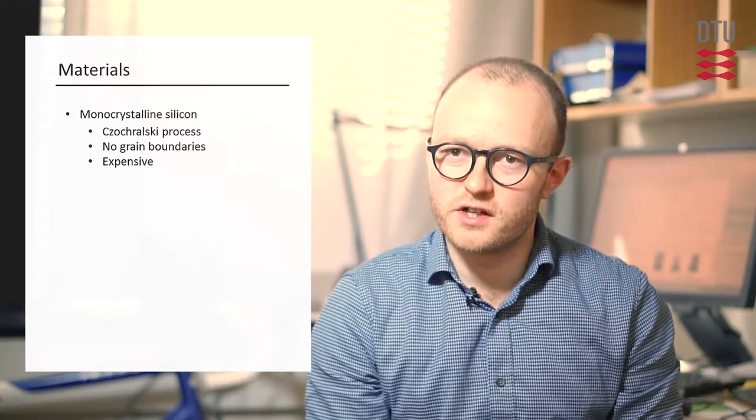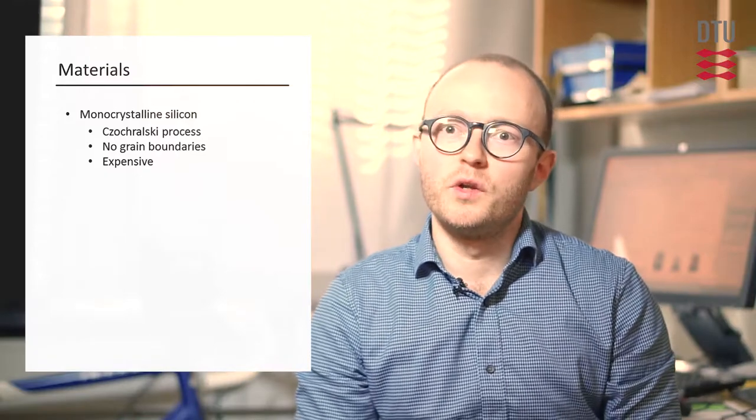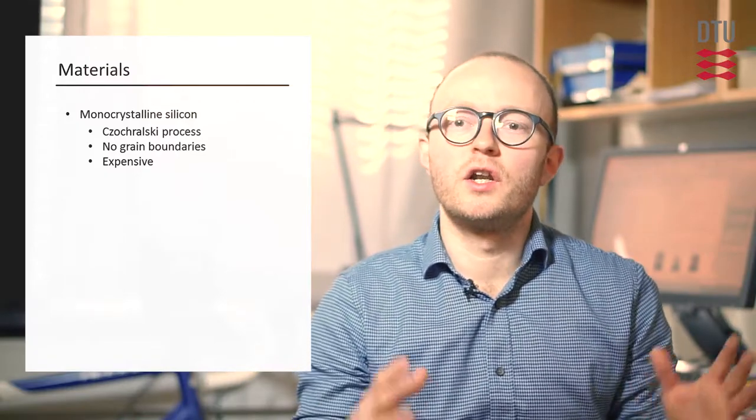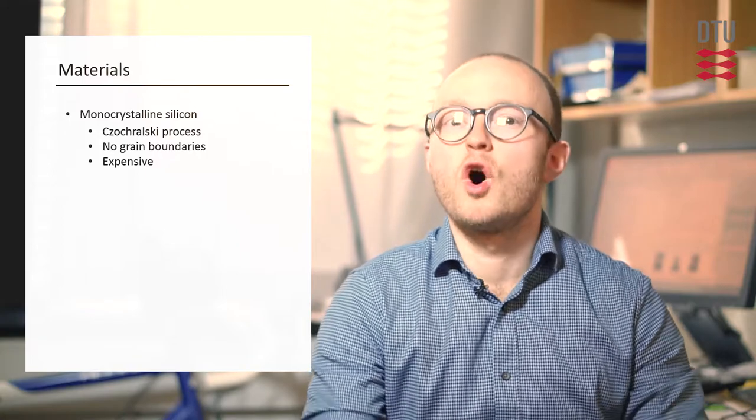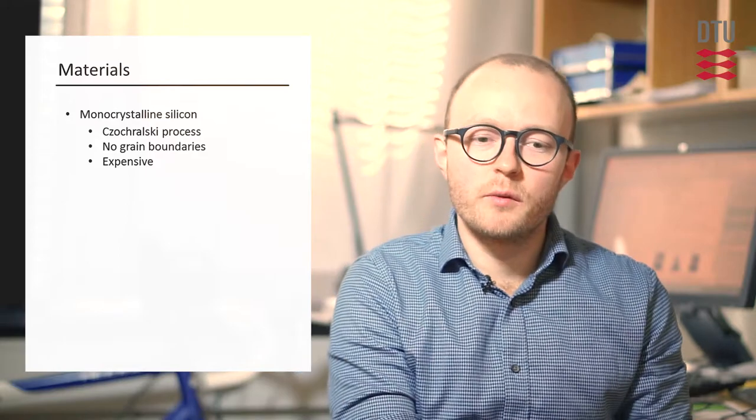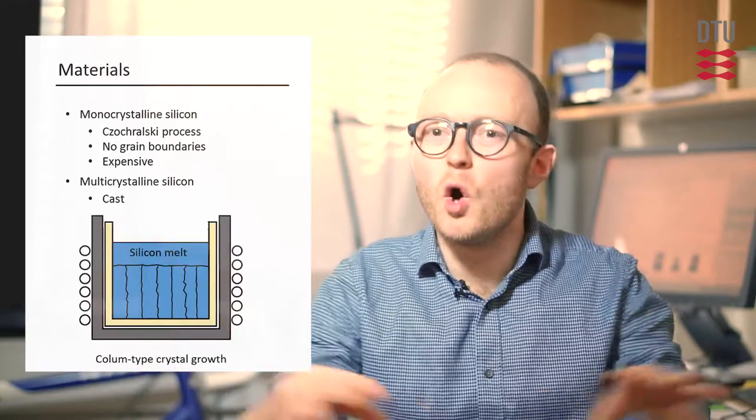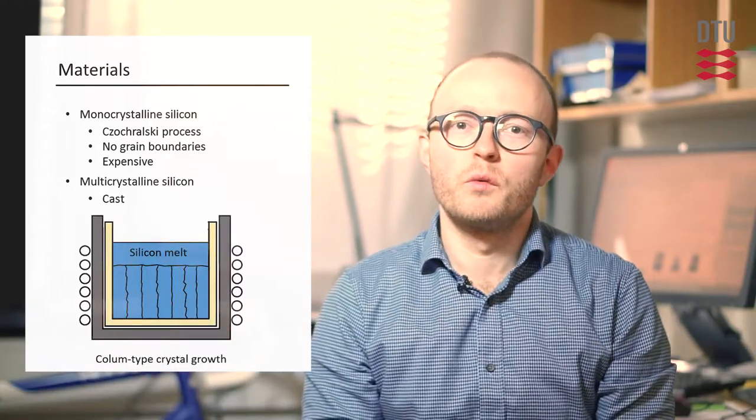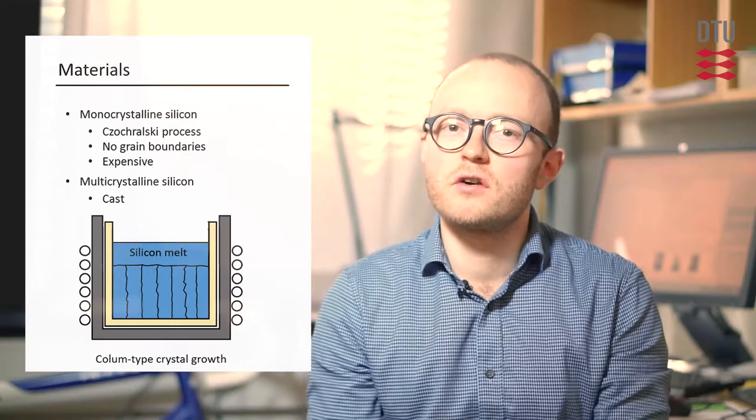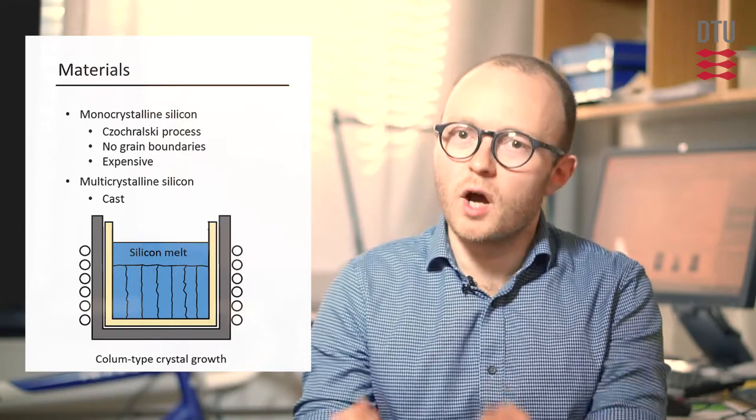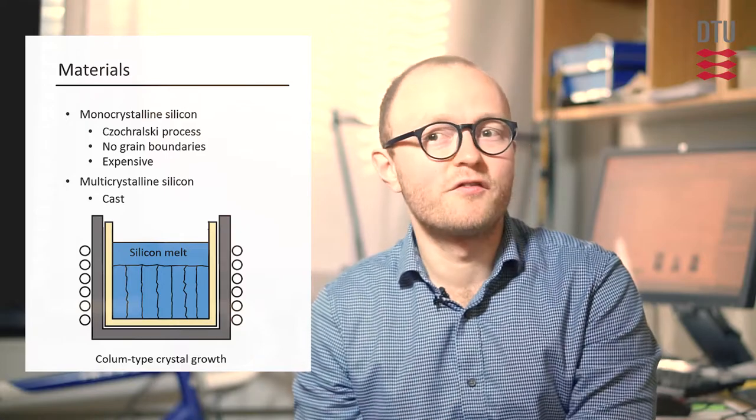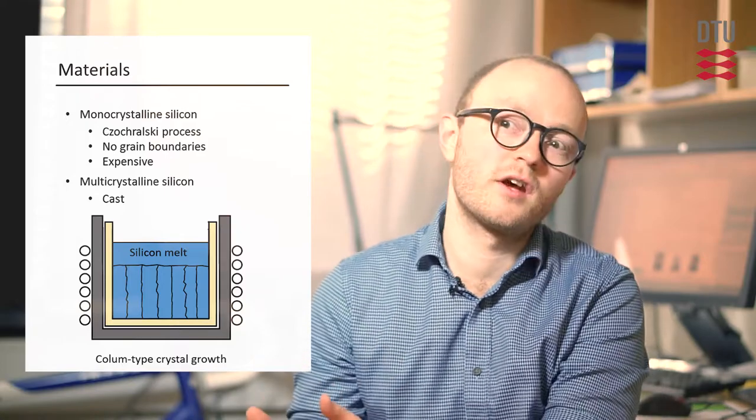But this is an expensive way of producing silicon wafers, because we need to grow this ingot in a very clean environment, and we need to have a molten silicon melt where we draw this ingot from. And that's typically quite expensive. It's more expensive compared to the multicrystalline silicon cells that are cast in a mold. When we do that, we get grains of different crystal orientation, which gives recombination at the grain boundaries. But it is a cheaper way of manufacturing the wafers and therefore also the cells.